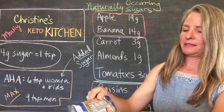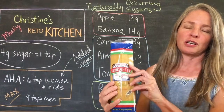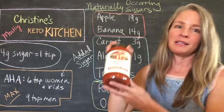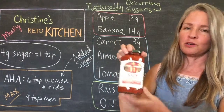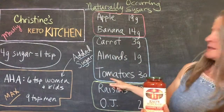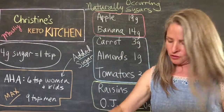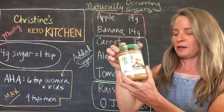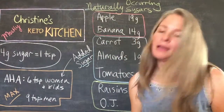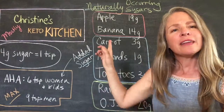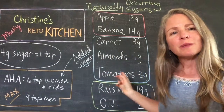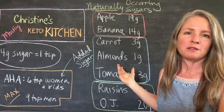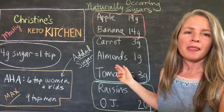Pasta has two grams of sugar in a serving. Pasta sauce has a little bit of sugar because tomatoes contain sugar naturally. Peanut butter was less than one gram. So there are small amounts of naturally occurring sugars in many foods we eat.